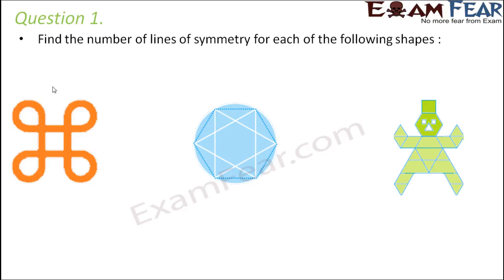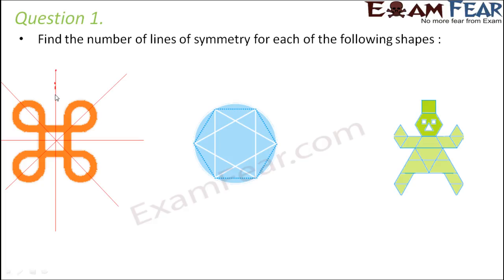So for the first shape, I have drawn the lines of symmetry. It has a vertical line of symmetry because it divides it into two equal halves. An easier way of guessing is that the center looks like a square, and a square has four equal sides, so it should have four lines of symmetry. We have one vertical, one horizontal, and two diagonal lines of symmetry — a total of four lines of symmetry.